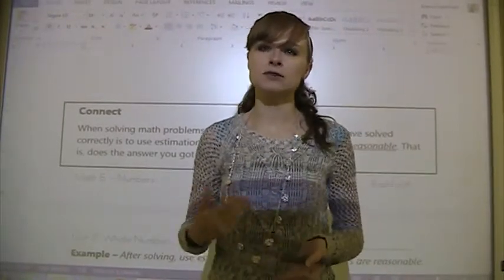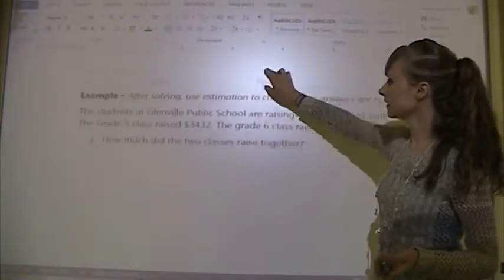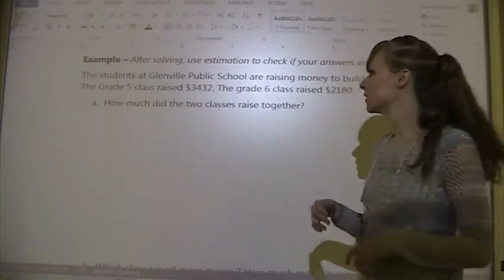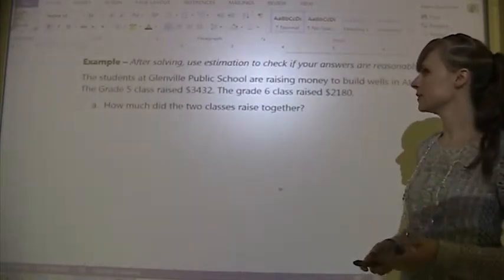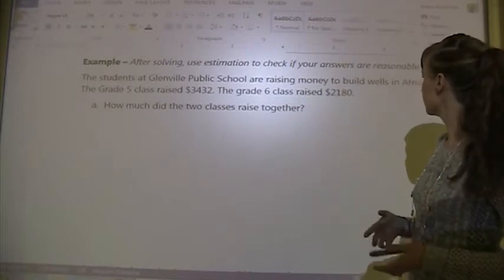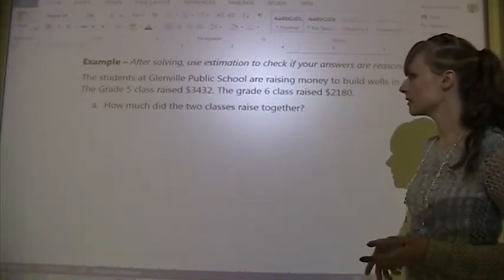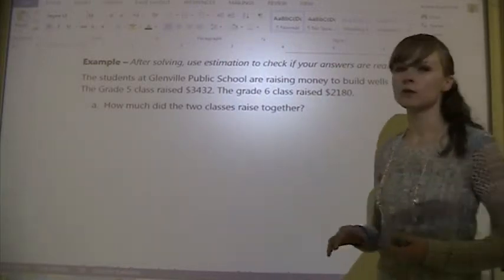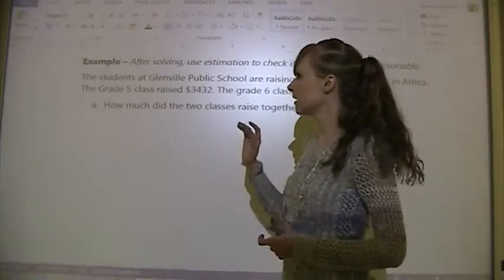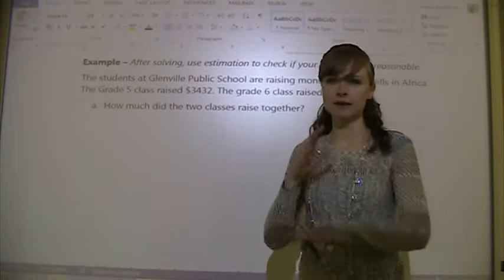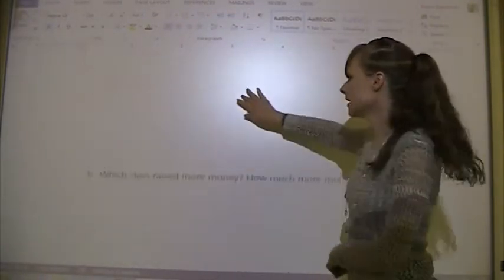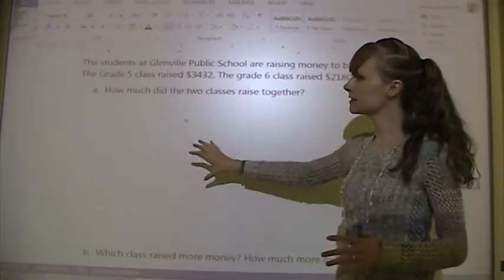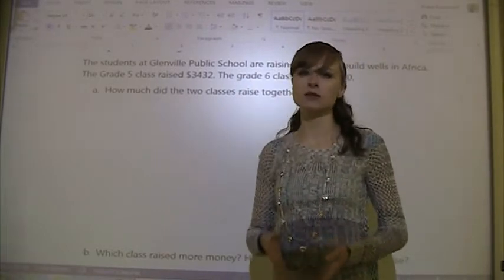This one we're going to solve and then we're going to do estimating. The students at Glenville Public School are raising money to build wells in Africa. The grade five class raised $3,432. The grade six class raised $2,180. You're going to do this on your own by pausing the video. The questions are: how much did the two classes raise together? You are adding because it's together. And then which class raised more money? How much more money did it raise? You're subtracting. Remember, you're finding the full answer and then estimating.